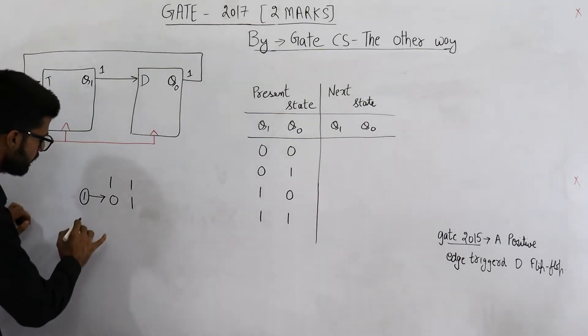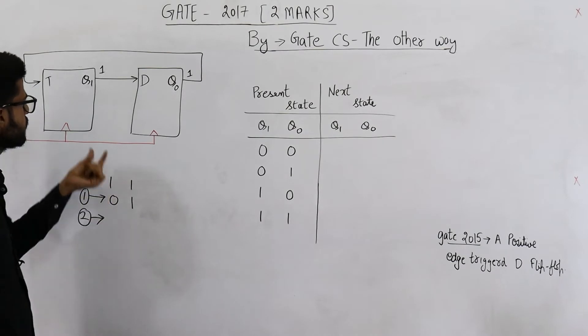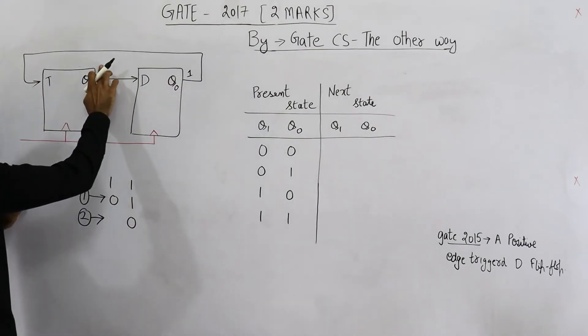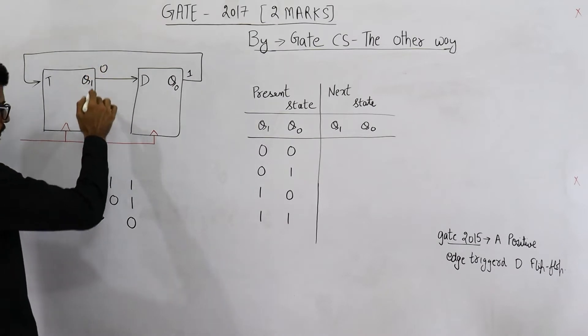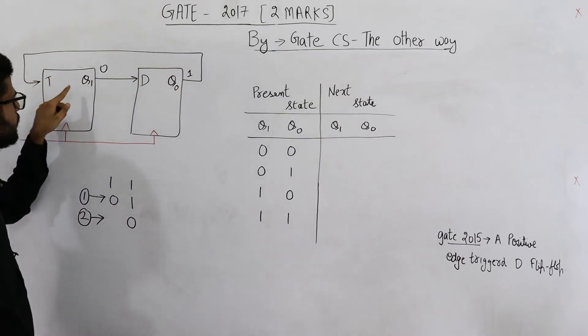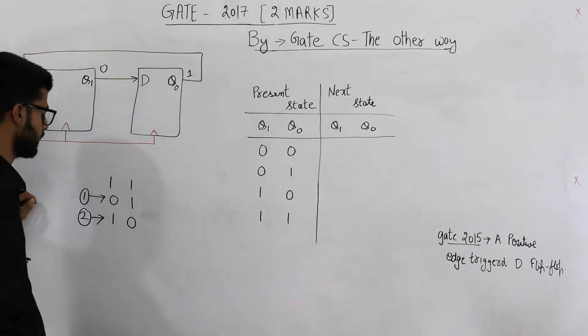Now see, upon giving second clock, whatever is this Q1, it will shift here, that means 0 will come here. See, currently we are in state 01. Now this 0 will shift here. Because this is 1, this Q1 will again toggle. So it will become 10 like this.